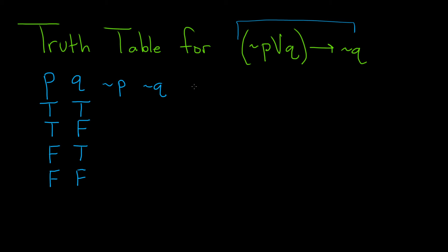And then from what we have here, we can now construct not P or Q. And then lastly, we can write down our final statement: not P or Q implies not Q.